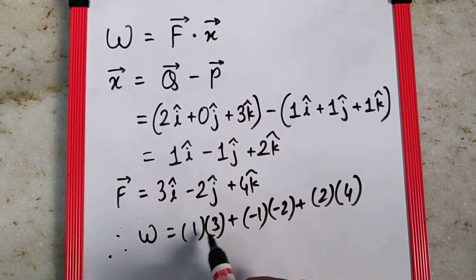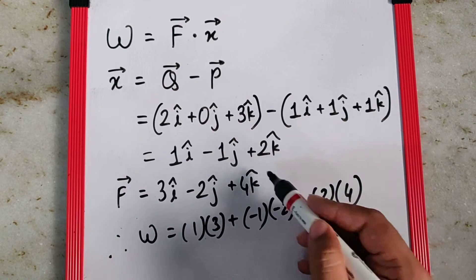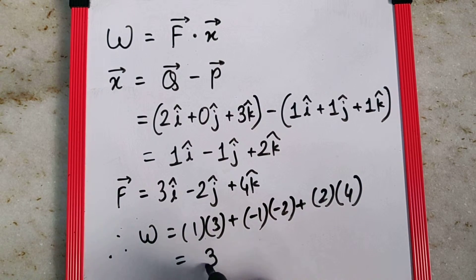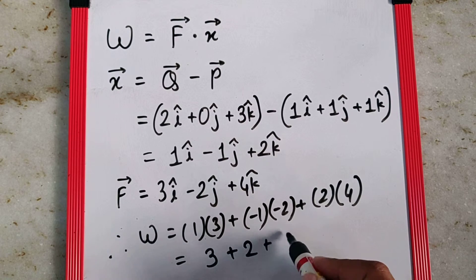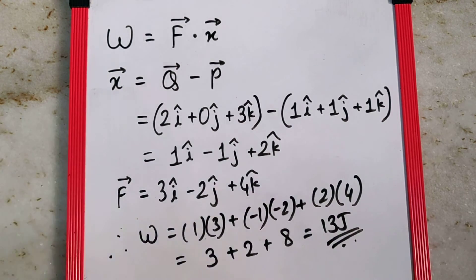It's the i cap term multiplication, j cap term multiplication, and k cap term multiplication, and the addition of all. That gives you 3 plus 2 plus 8, which makes it 13 joule. That's the final answer.